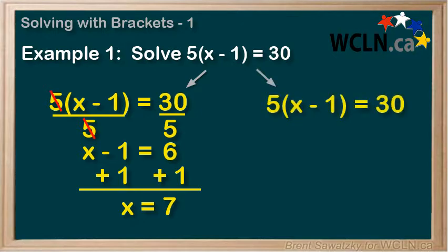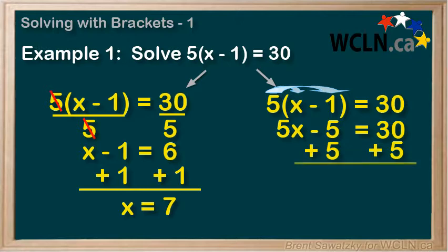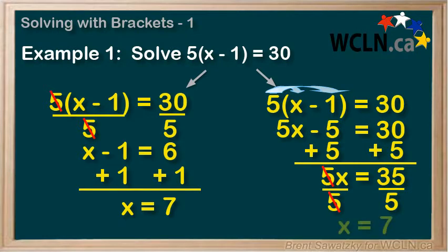The second method to get rid of the brackets is to use the distribution law. We recognize that the 5 impacts all of the items in the brackets. 5 times x equals 5x, and 5 times negative 1 equals negative 5, so we're left with 5x minus 5 equals 30. We add 5 to both sides, leaving 5x on the left and 35 on the right. Dividing both sides by 5 gives x equals 7. Both methods agree, so it doesn't matter which you choose. Method 1 keeps numbers smaller but only works nicely when numbers are all divisible, so Method 2 is more commonly used.